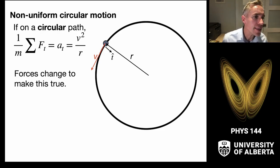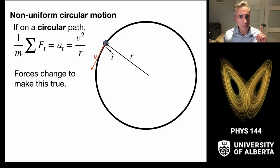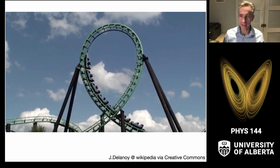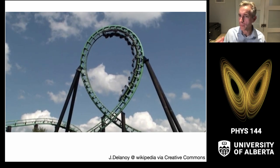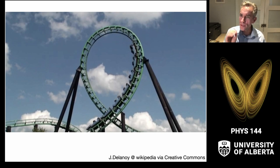In the case of non-circular motion, I want to consider an object on a circular path but not at a constant speed. Since it's on a circular path, we know the acceleration in the tangential direction must have a magnitude of v squared over r. The forces in the system must change to make this true. Consider a roller coaster going over a loop-de-loop, shooting up and over based solely on the forces and the requirement to stay on that circular track.